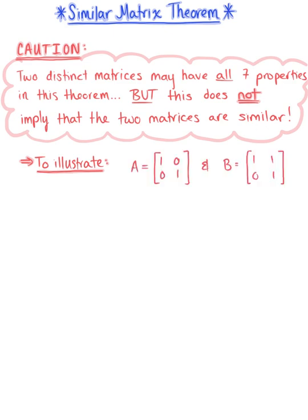Say matrix A is equal to the 2 by 2 matrix [1, 0, 0, 1], and matrix B is equal to the 2 by 2 matrix [1, 0, 1, 1].